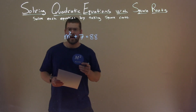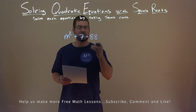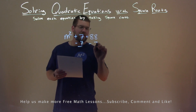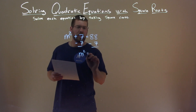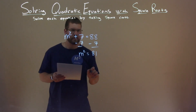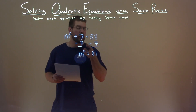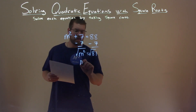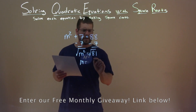We're given this problem: m squared plus 7 equals 88, and we want to solve this equation by taking square roots. First, I'm going to subtract 7 from both sides. That eliminates the 7 on the left, giving me m squared, and 88 minus 7 is 81. Now we have m squared equals 81. To get rid of that squared value, we need to take the square root of both sides.